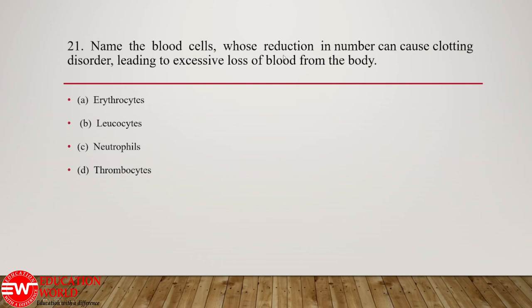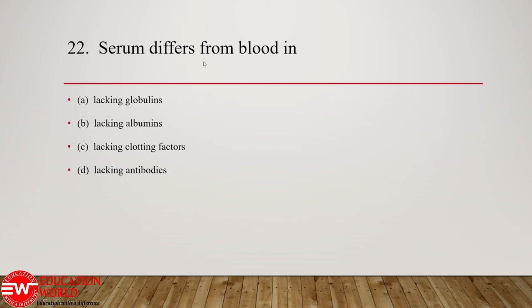Question number 21: name the blood cells whose reduction in number can cause clotting disorder leading to excessive loss of blood from the body. The answer is thrombocytes. Due to the loss of thrombocytes, blood clotting disorders can take place. Question 22: serum differs from blood in having — lacking globulins, lacking albumins, lacking clotting factors, or lacking antibodies. The correct option is C — serum does not have clotting factors in it.